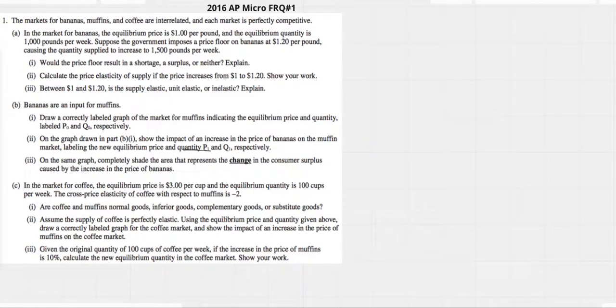2016 AP Micro FRQ number one for today. Let's see here. The market for bananas, muffins, and coffee are interrelated, and each market is perfectly competitive.